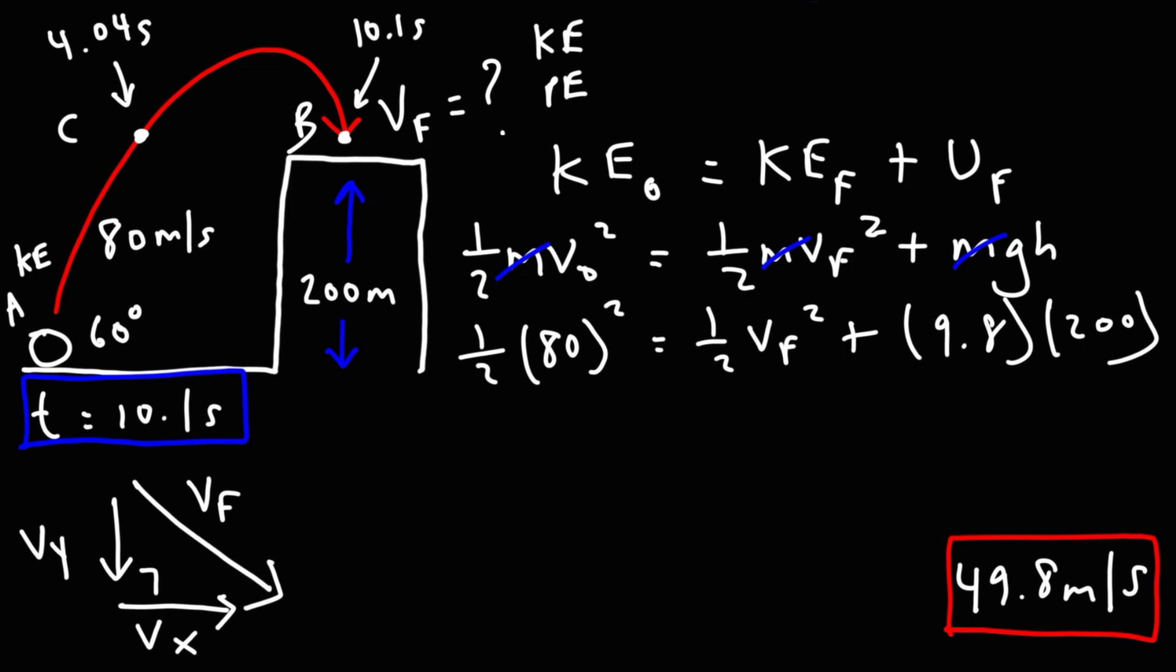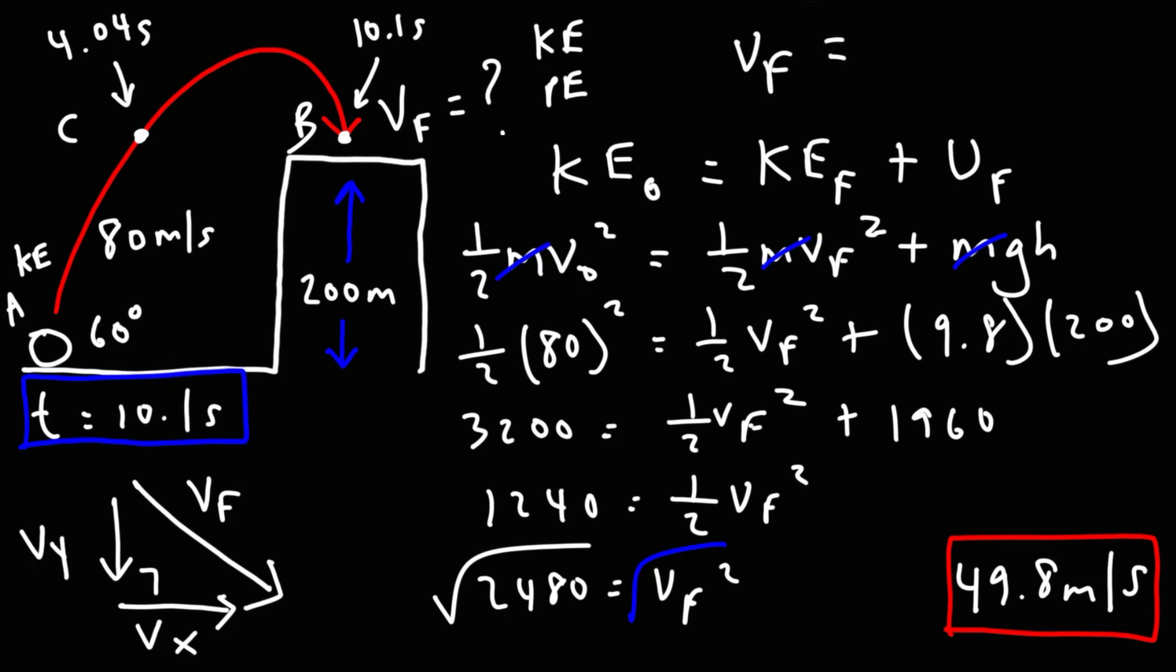Now, 80 squared is 6400, half of that is 3200. 9.8 times 200, that's going to be 1960. 3200 minus 1960, that's 1240. And in order to get rid of the 1 half, I'm going to multiply both sides by 2. So 1240 times 2 is 2480, and that's going to equal v final squared. Now, taking the square root of both sides, we're going to get that v final is 49.8 meters per second.